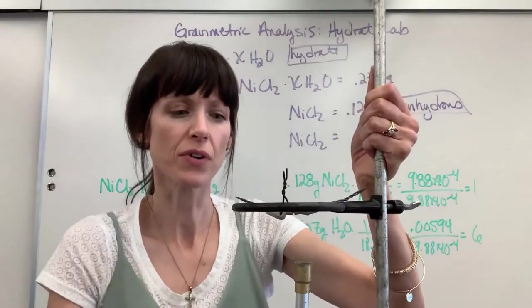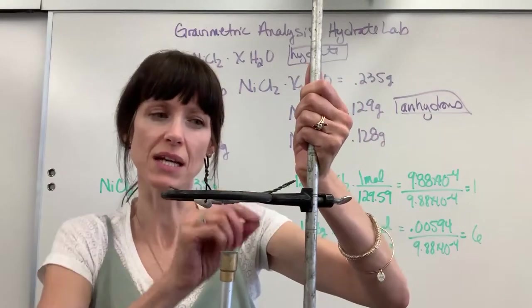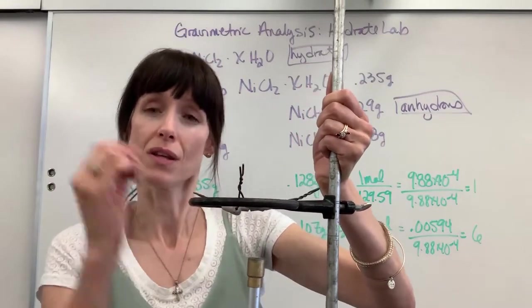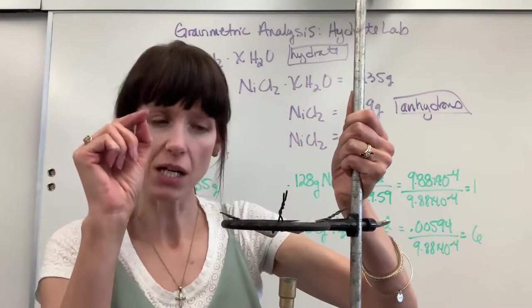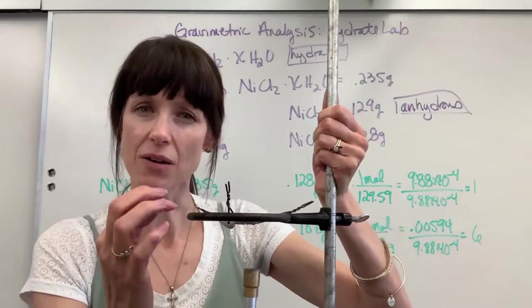So when you very first turn on your Bunsen burner, quickly adjust your ring stand to move up and down. So the inner blue flame, the very top of it, is going to touch, in essence, be the same level as that ring stand.